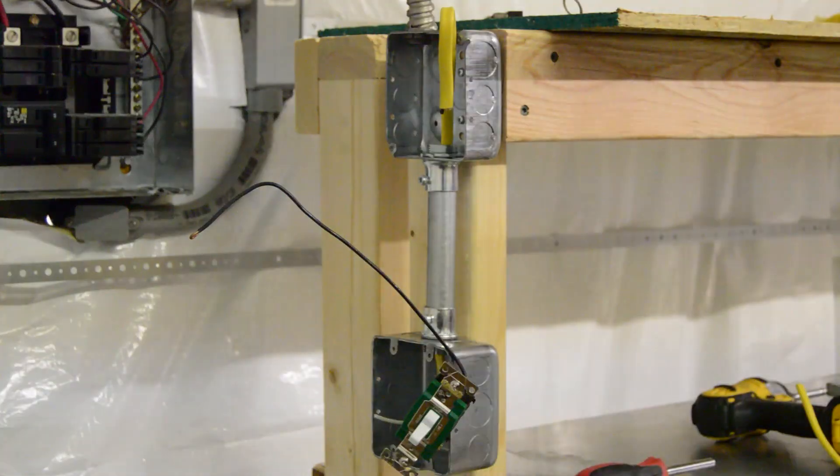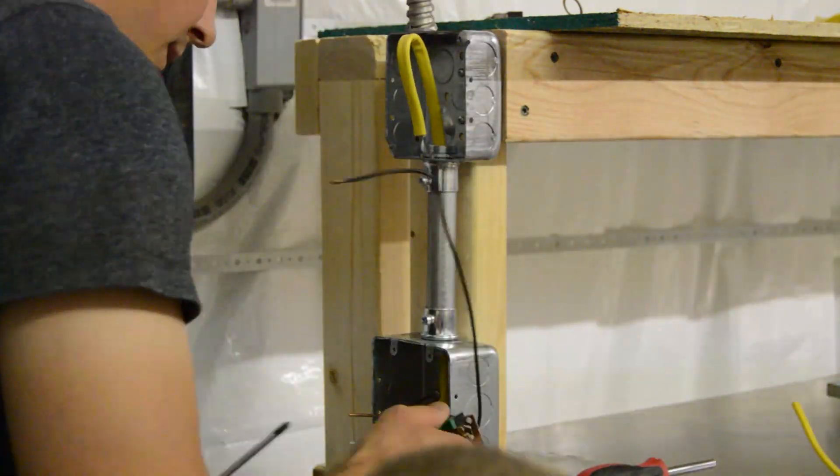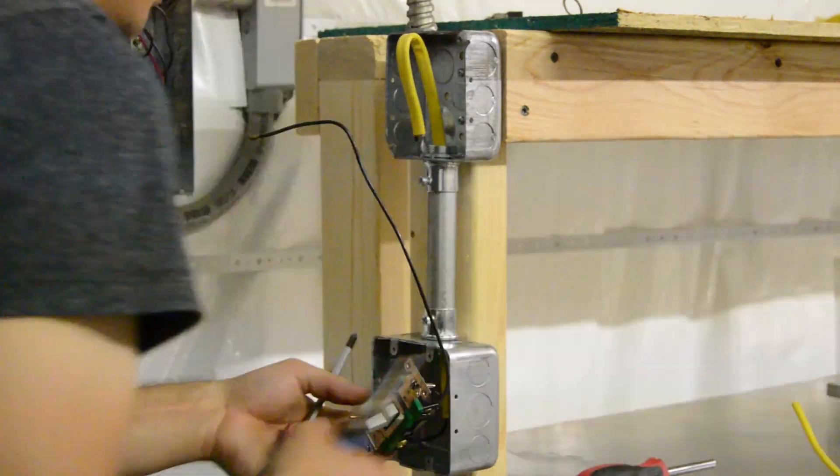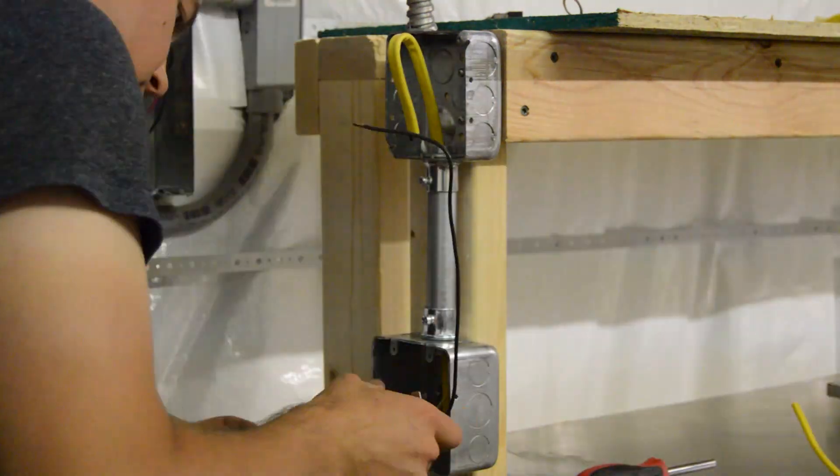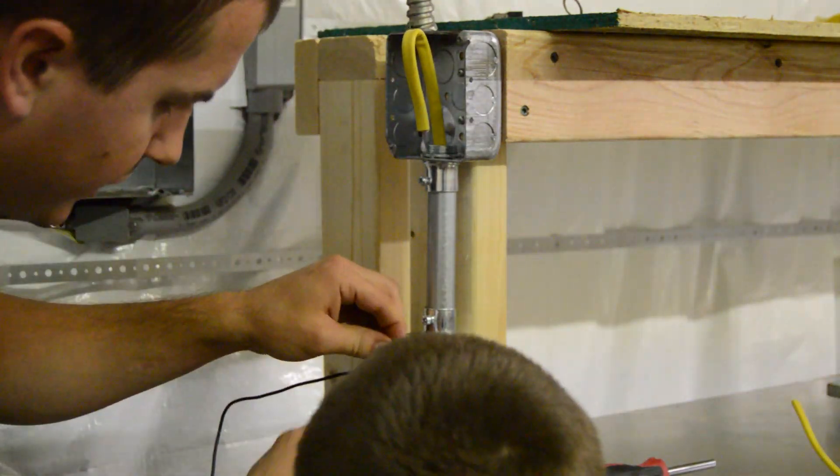But this will allow me to disconnect power to the reflow oven without having to unplug it, which is what I've been doing. It's a 30 amp switch, so more than enough amperage rating to handle the reflow oven.